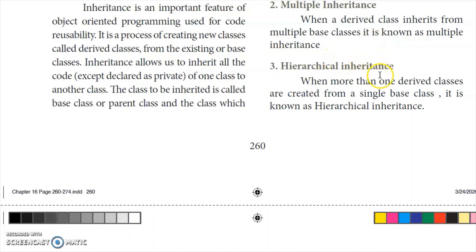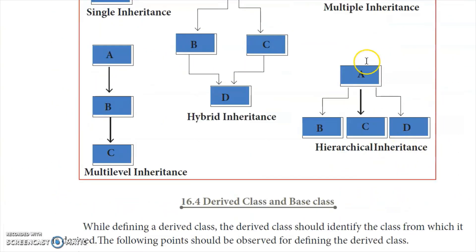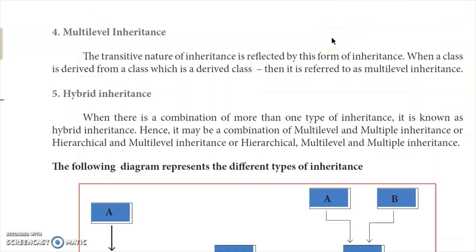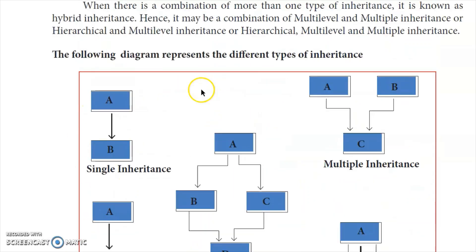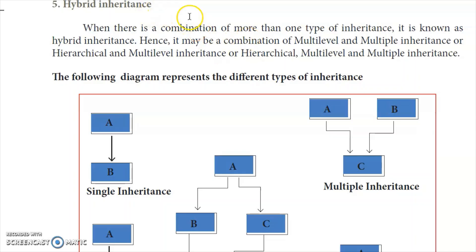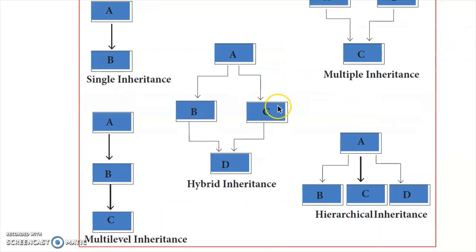Third type is hierarchical inheritance: more than one derived class is derived from a single base class — that is hierarchical inheritance. Multilevel inheritance has a transitive nature: one base class has one derived class, and that derived class becomes the base for another derived class — we call this multilevel inheritance. Hybrid inheritance is a combination of these types.